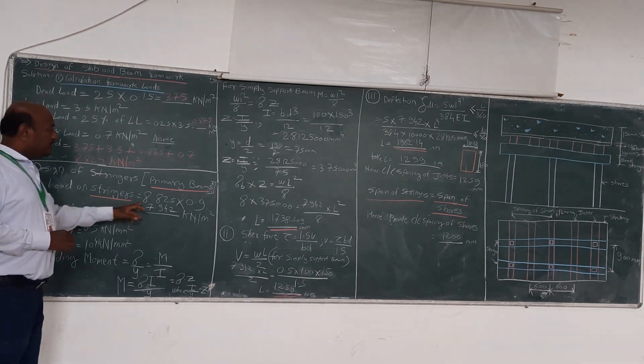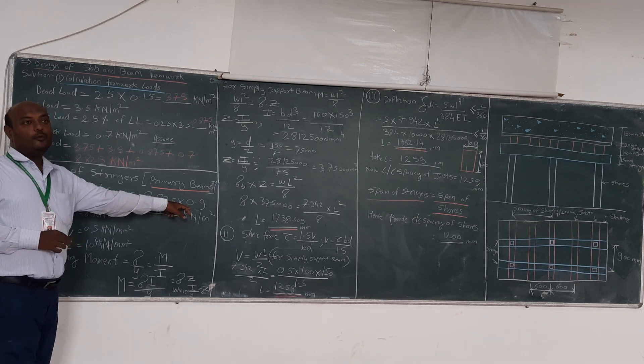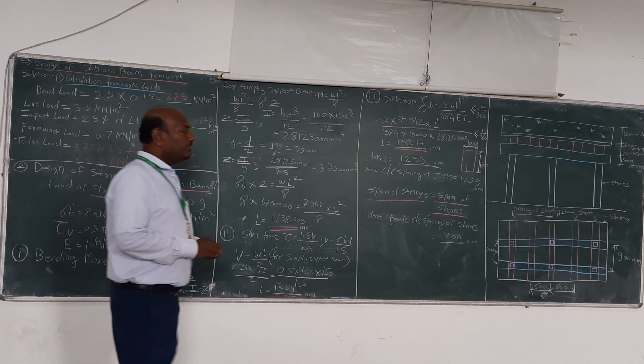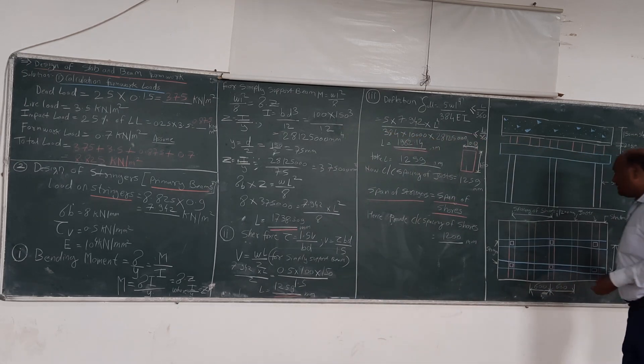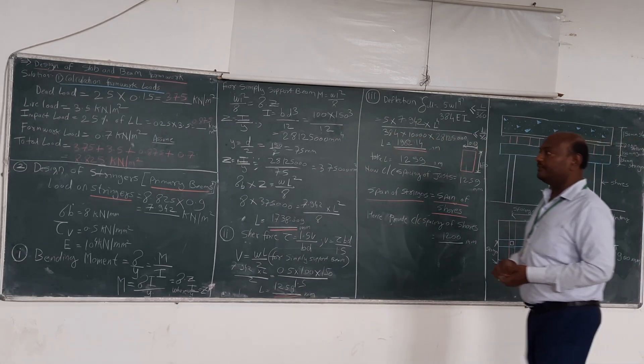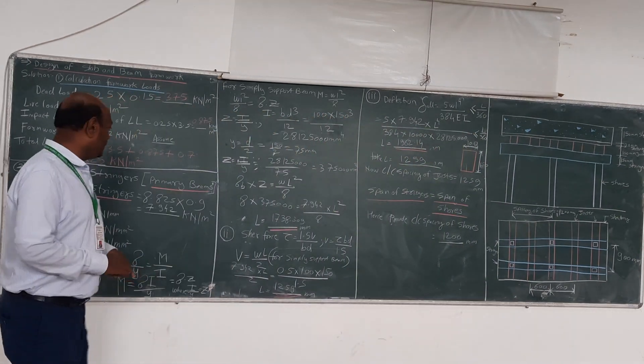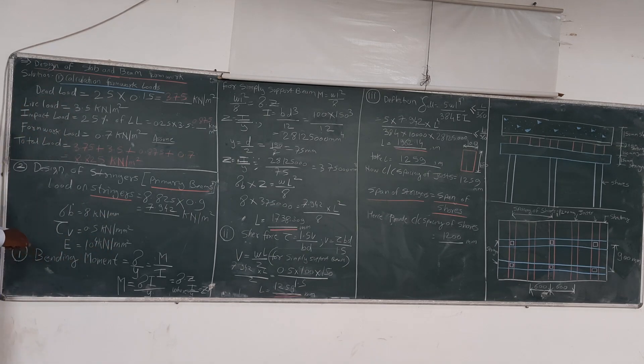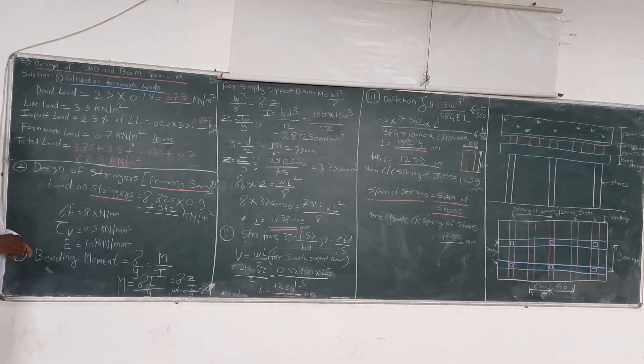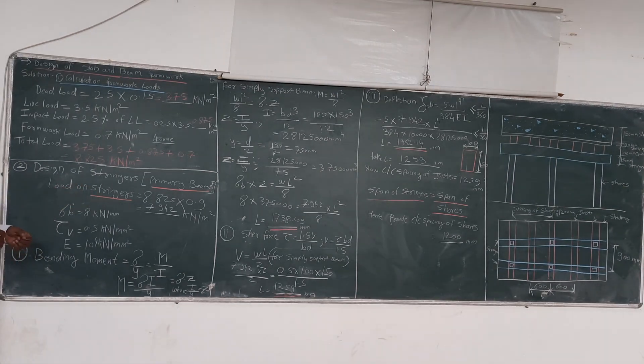Now load on Stringer is equal to 8.825 multiplied by 0.9. 0.9 is nothing but the spacing of the Stringer. This is the spacing of the Stringer which we got in designing of the joist. So now the load on the Stringer is 7.942 kN per meter square, which is the load coming on the Stringer.